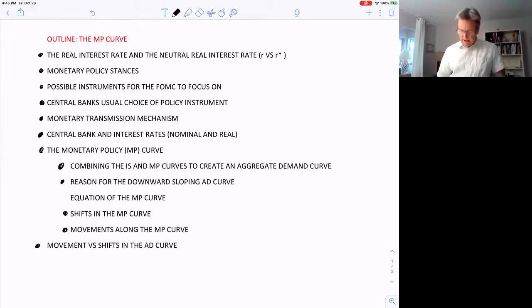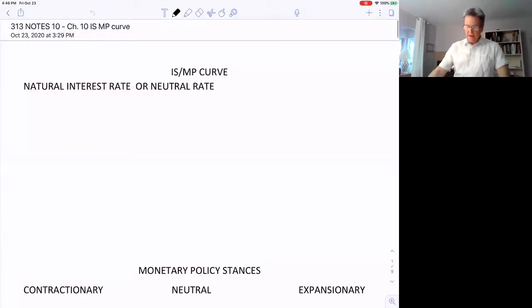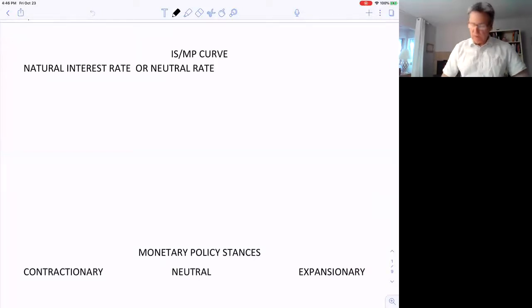Then we'll take a look at the aggregate demand curve and look at that as far as what causes the shift and what causes the movement. Okay, so first the natural rate or the neutral rate.